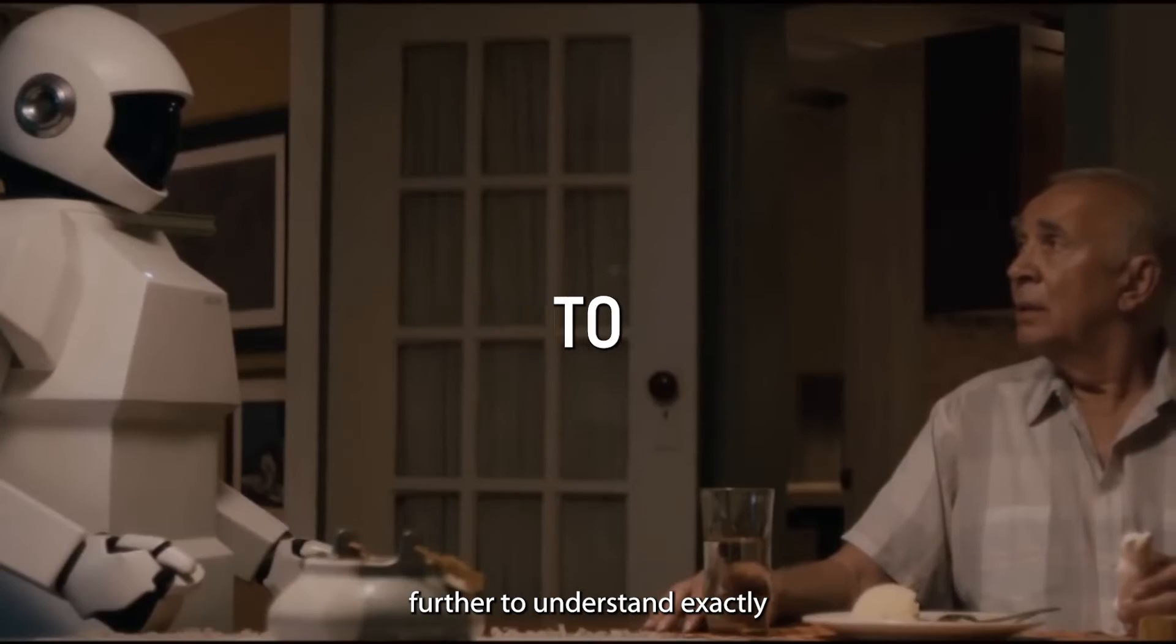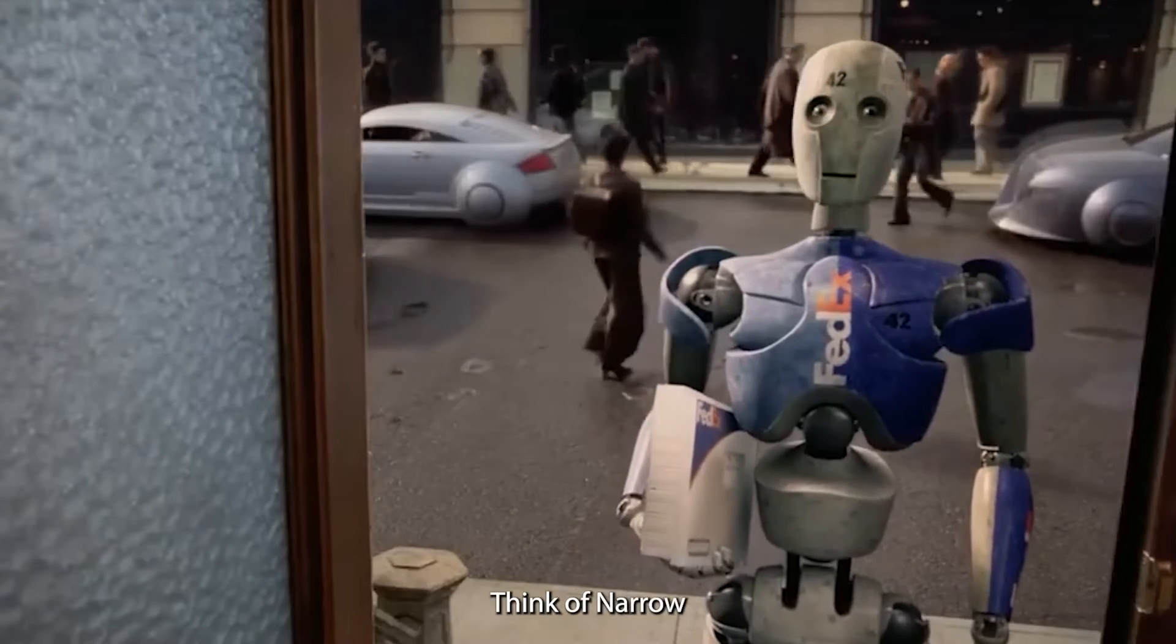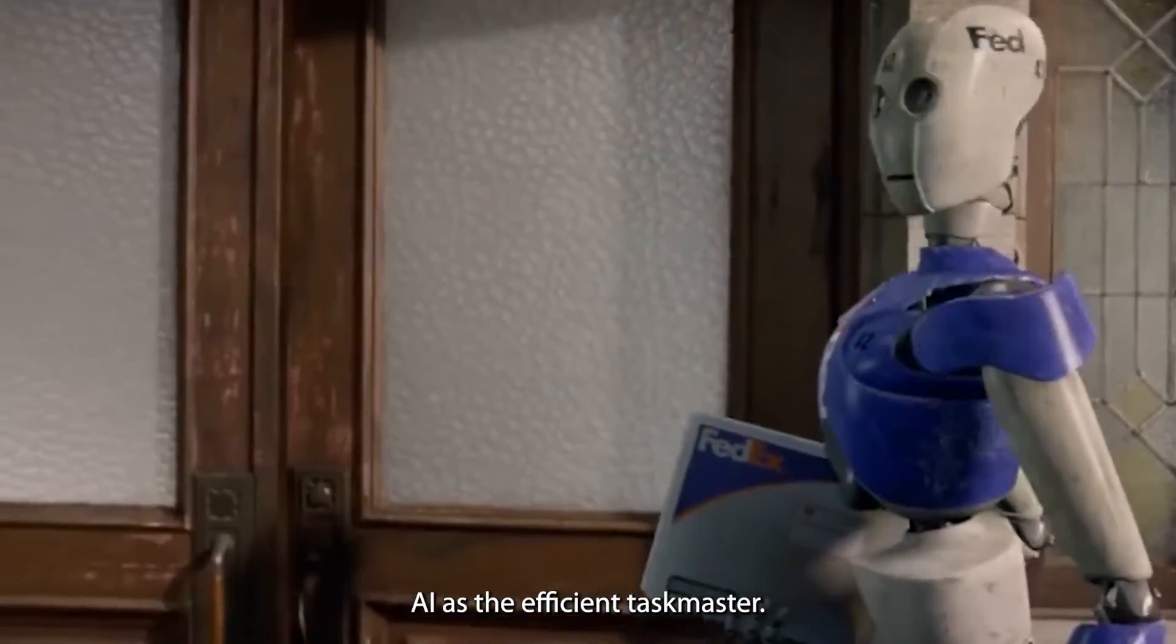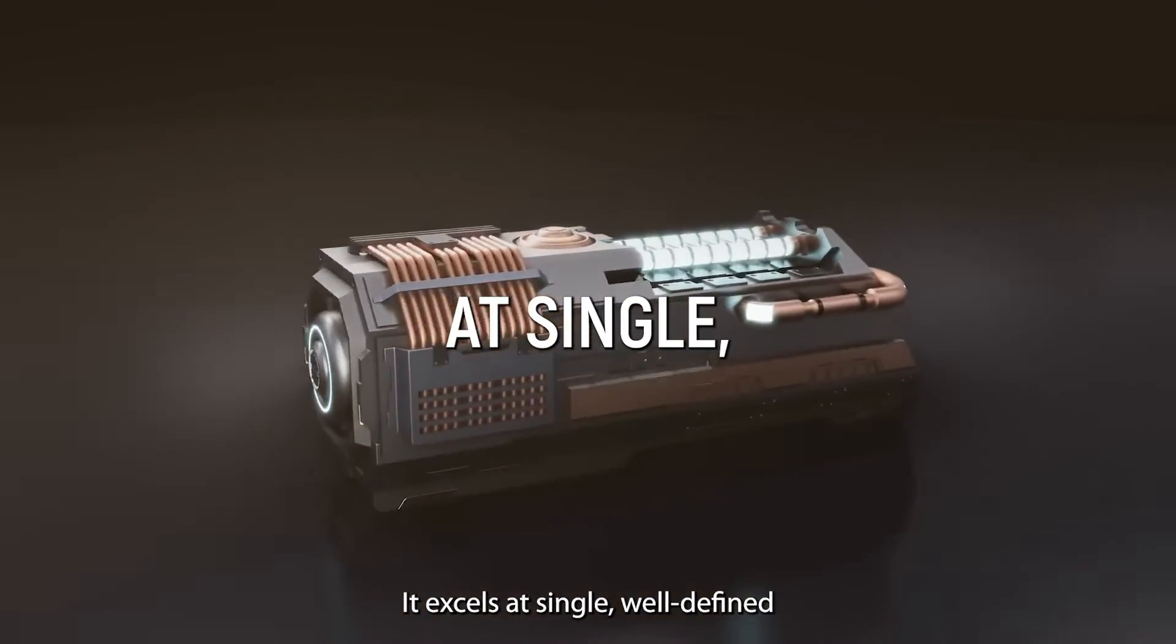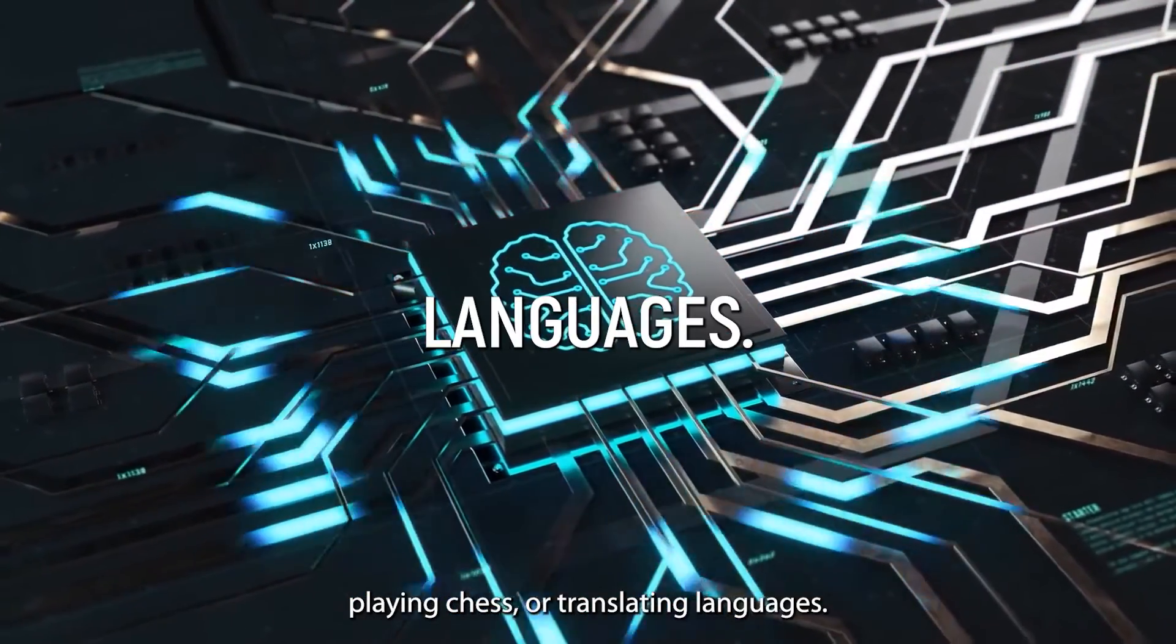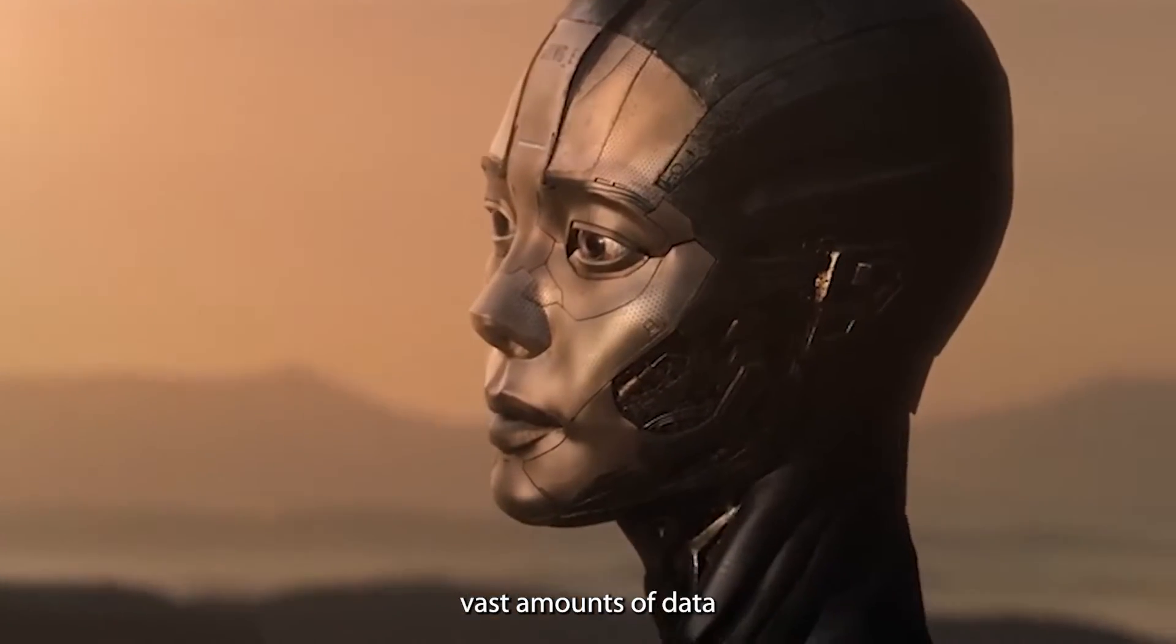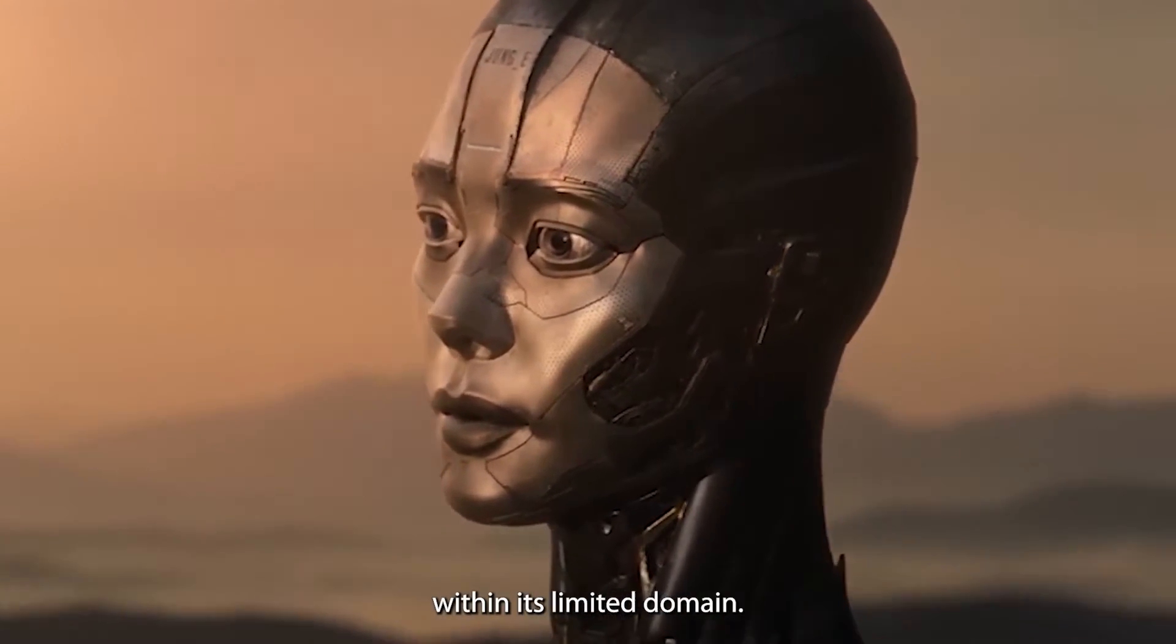We can break these stages down further to understand exactly what has to happen to reach the super AI level. Think of narrow AI as the efficient taskmaster. It excels at single, well-defined goals such as facial recognition, playing chess, or translating languages. Powered by machine learning algorithms, it analyzes vast amounts of data to make precise predictions within its limited domain.